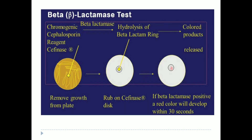We then observe the disc for a change in color. As seen in the diagram, there is a color change from yellow to red. If beta-lactamase is positive, a red color will develop within 30 seconds. In a positive reaction, the yellow will change to red color in the area where the culture is applied. For most bacterial strains, a positive result will develop within five minutes; however, positive reactions for some staphylococci may take up to one hour to develop.